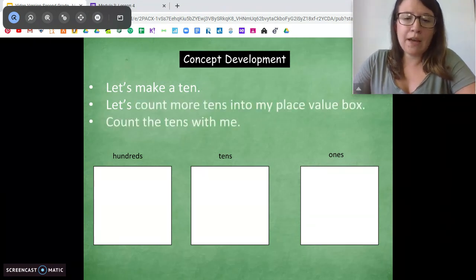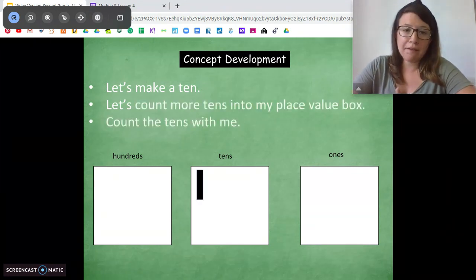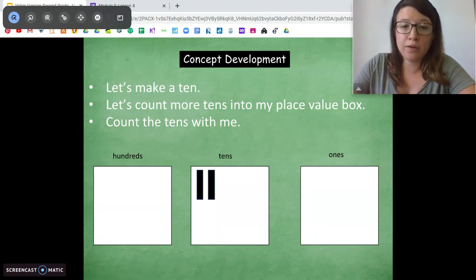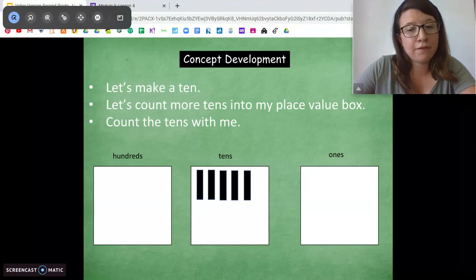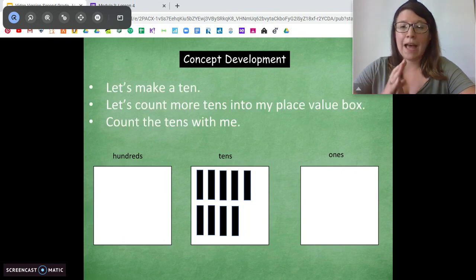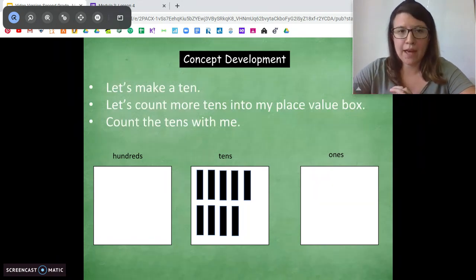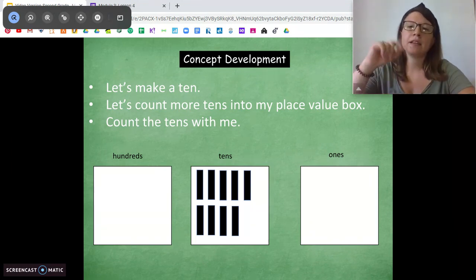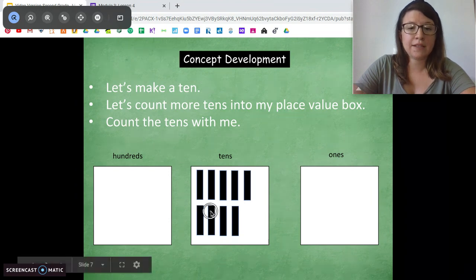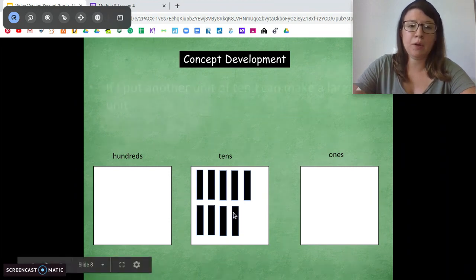Let's count the 10s in the box now. Ready? So we have that one 10 from before, so let's count our 10s. We have 1, 2, 3, 4, 5, 6, 7, 8, 9 10s. We have 9 10s. What is the value of that? 90. Very good. We can count by 10s. 10, 20, 30, 40, 50, 60, 70, 80, 90. Beautiful.